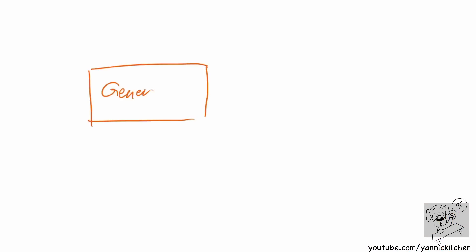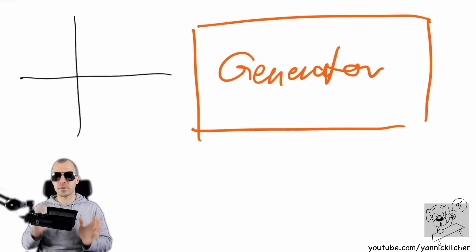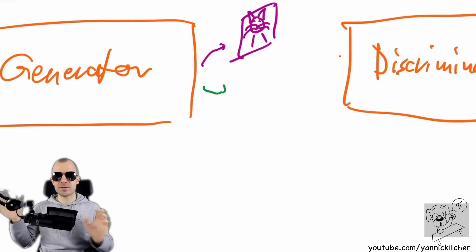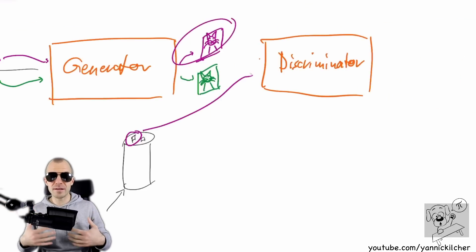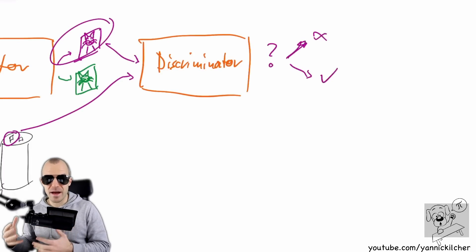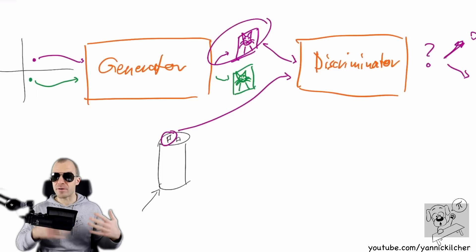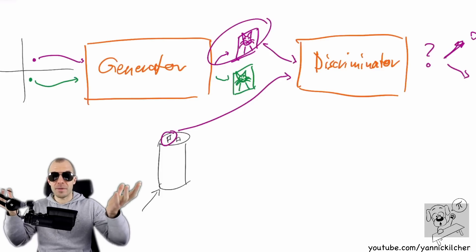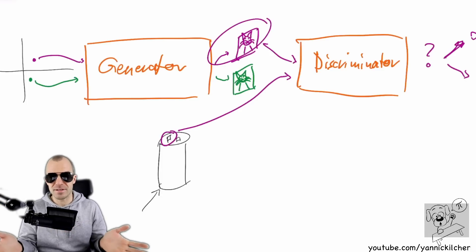Very briefly, a GAN consists of two neural networks: one called the generator and one called the discriminator. While the generator tries to produce fake images, the discriminator tries to differentiate those fake images from real images in a dataset. As the discriminator gets better at discerning what is real and what is fake, the generator in turn gets better at fooling the discriminator. Therefore both neural networks get better and better, and at the end the generator is really good.